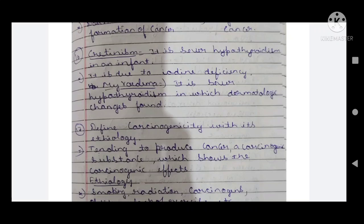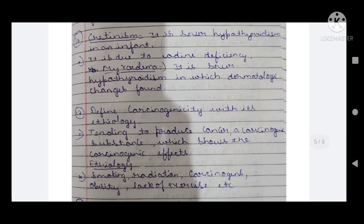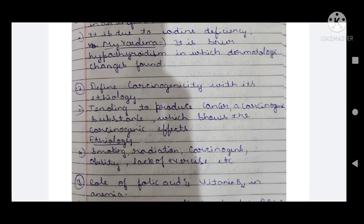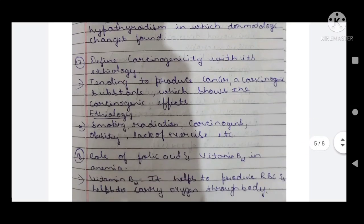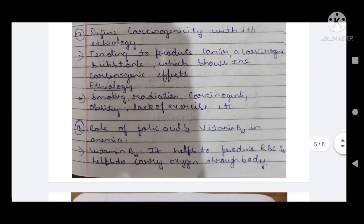Seventeenth question: define carcinogenicity with its etiology. Carcinogenicity refers to substances that tend to produce cancer or show carcinogenic effects. Causes include smoking, radiation, carcinogenic chemicals, obesity, and lack of exercise — these are the basic causes of cancer.